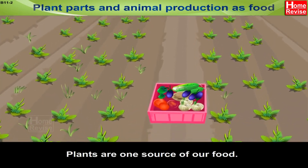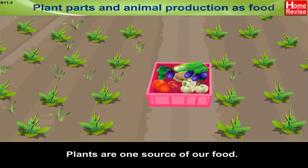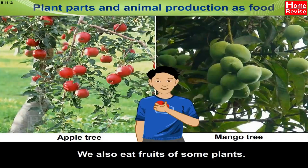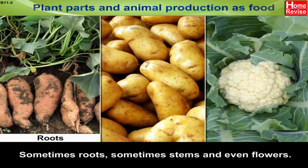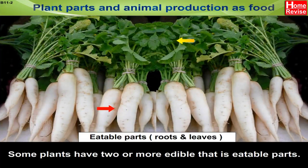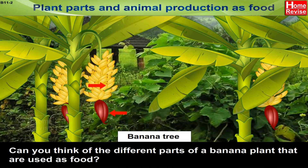Plants are one source of our food. We eat many leafy vegetables, and we also eat fruits of some plants. Sometimes we eat roots, sometimes stems, and even flowers. Some plants have two or more edible — that is, eatable — parts. Can you think of the different parts of a banana plant that are used as food?